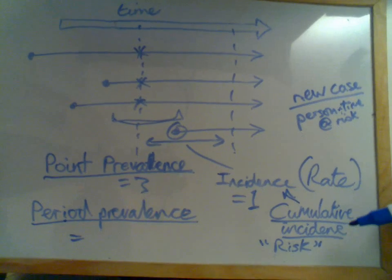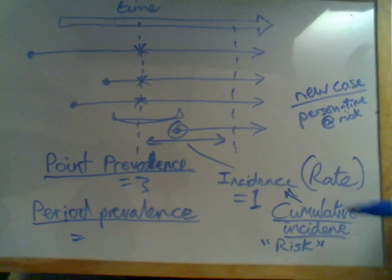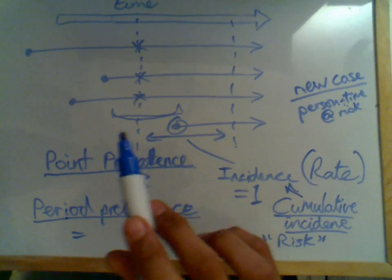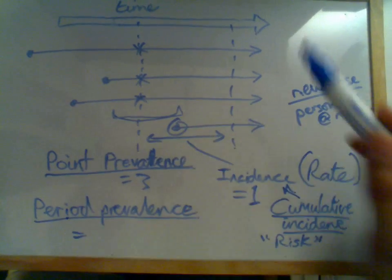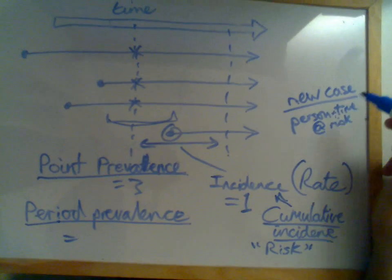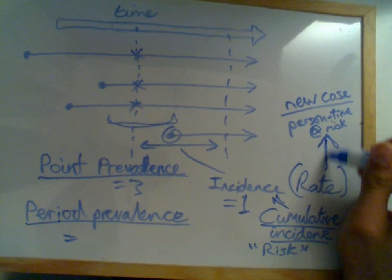Cumulative incidence is useful in a stagnant population where you don't have many people moving. So you don't need to worry. You just simple measure over a period of time. In my population, nobody moved. Everyone was around.